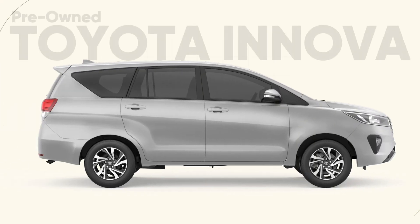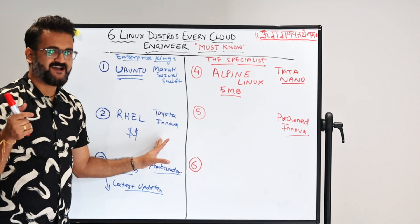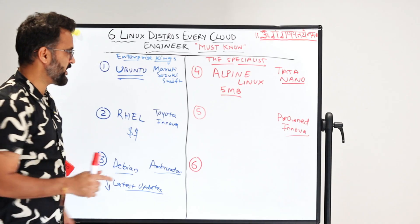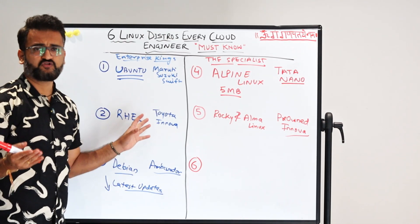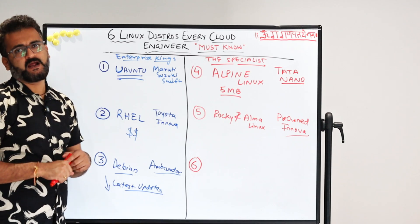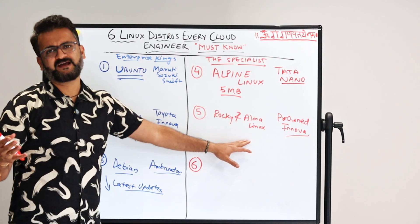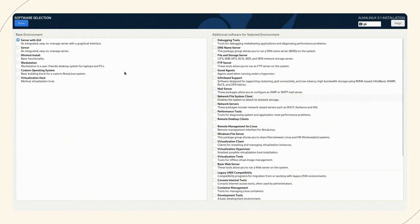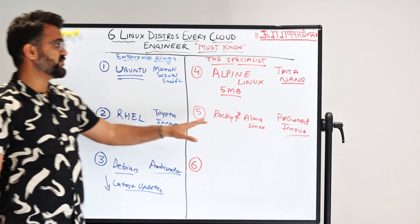The fifth one is the pre-owned Innova. If you don't have money for a brand new Innova, you go for a pre-owned one which is cheaper — and that's what Rocky Linux and Alma Linux provide. When CentOS was discontinued and CentOS Stream wasn't well received, Rocky and Alma Linux came into the market as a freer version of Red Hat Enterprise Linux. Both these versions have very good compatibility and are open source and free to use.